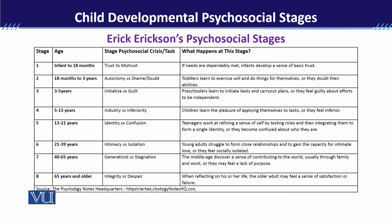21 to 39 years میں Intimacy versus Isolation develop ہوتی ہے۔ اس time کے دوران young adult close relationships develop کرتا ہے اور intimate relationships بنانے کی کوشش کرتا ہے۔ اگر intimacy appropriately develop ہو جائے تو marital اور long-term commitments develop ہوتی ہیں۔ اگر healthy relationships develop نہ ہو سکیں تو وہ isolation کی طرف جا سکتے ہیں۔ (Stage 21–39: Intimacy vs. Isolation. Young adults seek intimate relationships. Success leads to committed relationships; failure leads to isolation.)